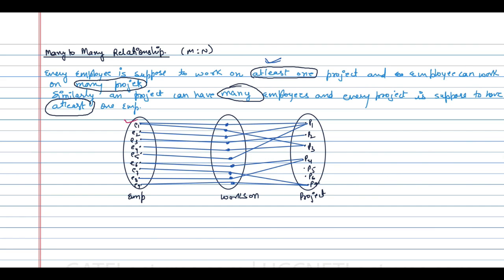Employees E5 and E1 are working on more than one project. Projects P1, P2, P4, and P7 have many employees. Every project must have at least one employee, so for P5 and P6 we assign E4 to P5 and E6 to P6, satisfying the requirement that every project has at least one employee.